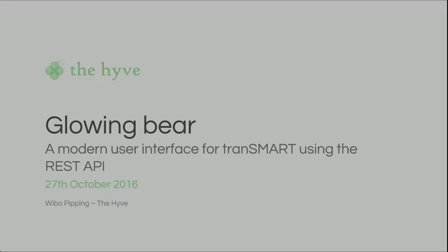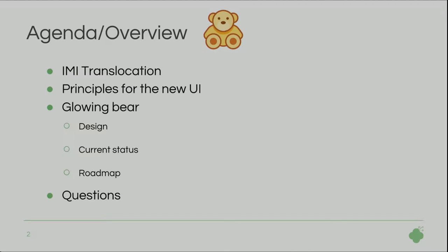I'll be talking about GlowingBear, which is the working name for a modern user interface for Transmart that uses the REST API. I'll first tell something about IMI Translocation, the project under which this UI is being developed, the principles we use for the new UI, then something about GlowingBear itself — the design, the current status, and the roadmap. And then there's some room for questions.